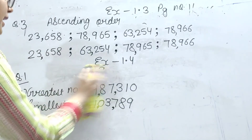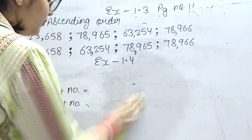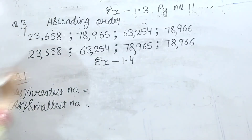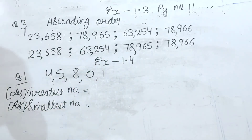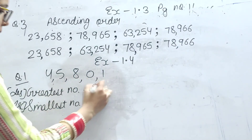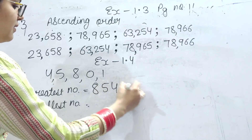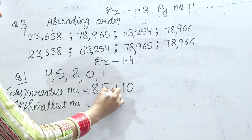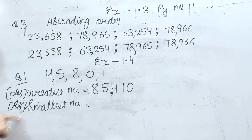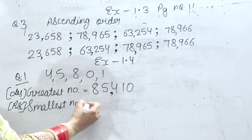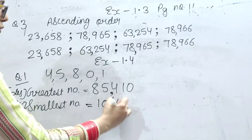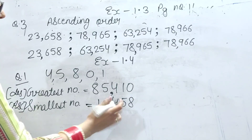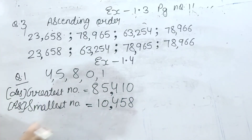Ek aur question karte hain isi ka. Digits hain: 4, 5, 8, 0, 1. Greatest ke liye descending order: 8, 5, 4, 1, 0. Ones, tens, hundreds — comma — thousands, ten thousands. Smallest number ke liye ascending order, lekin agar zero bhi hai, to zero humara second place pe aayega. So we'll start from 1, then 0, then 4, 5, 8. Ones, tens, hundreds — comma — thousands, ten thousands.